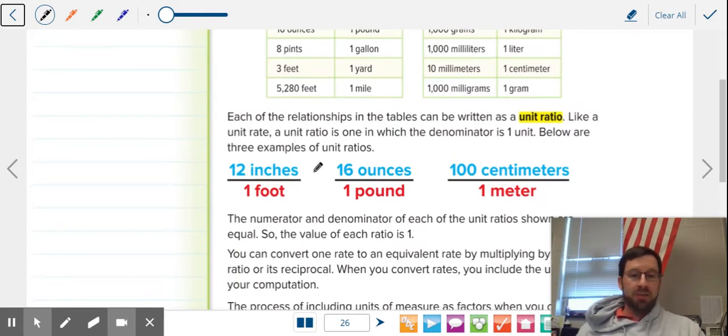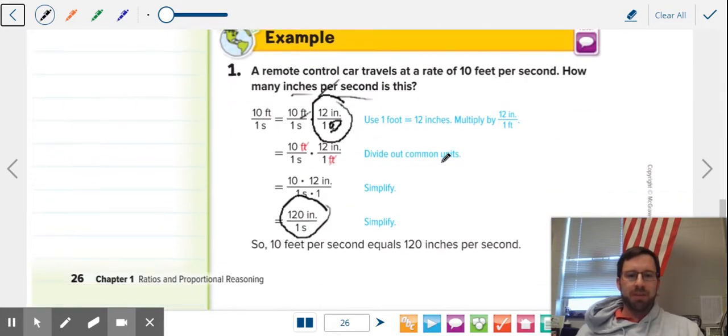We're going to take them and turn them into fractions. The fractions can be this way or they can be this way. It doesn't matter. Well, it does matter. It depends on how the rate is set up. That is what is really important. So let's jump right in.